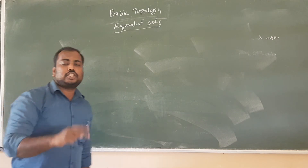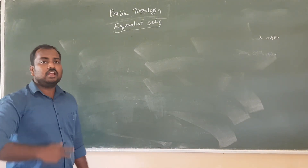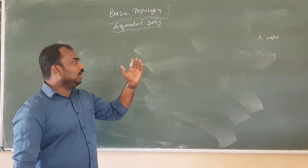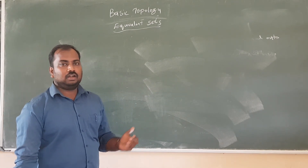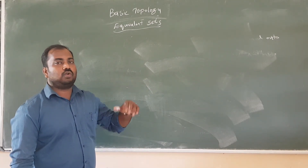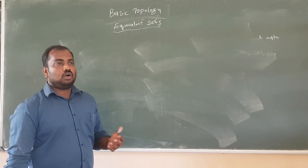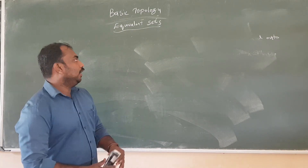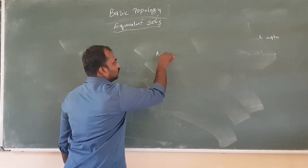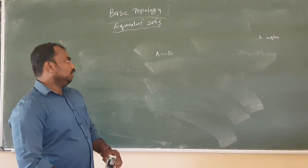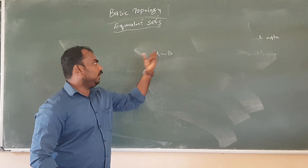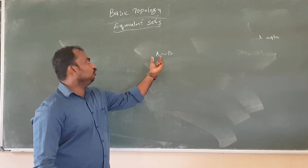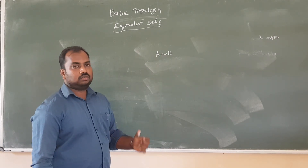A and B are said to be equivalent if there is a one-one onto correspondence from A to B — that is, a one-one onto mapping from A to B — meaning A and B are in one-one correspondence, or cardinality of A equals cardinality of B, denoted A is equivalent to B. We say the equivalence relation is reflexive, symmetric, and transitive; therefore the relation is an equivalence relation. Thank you.